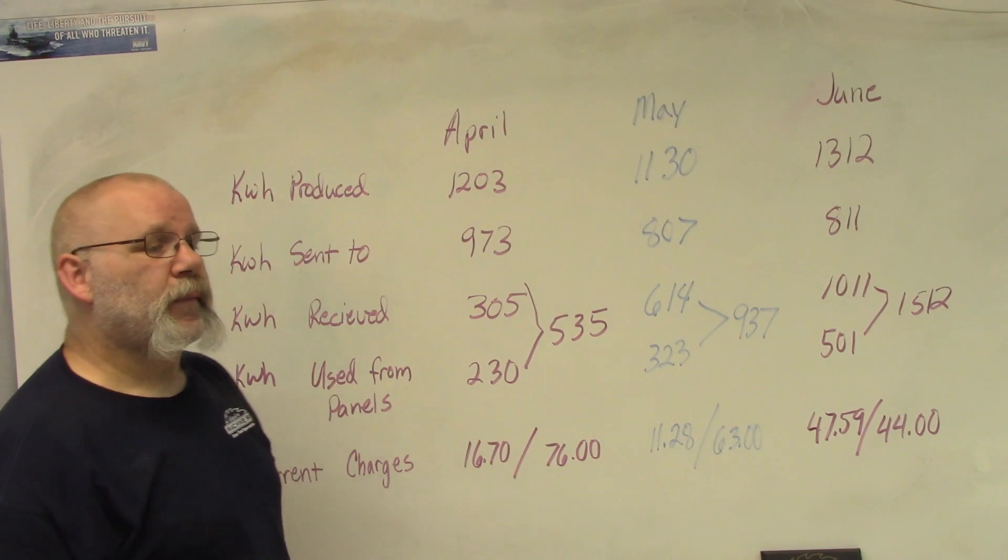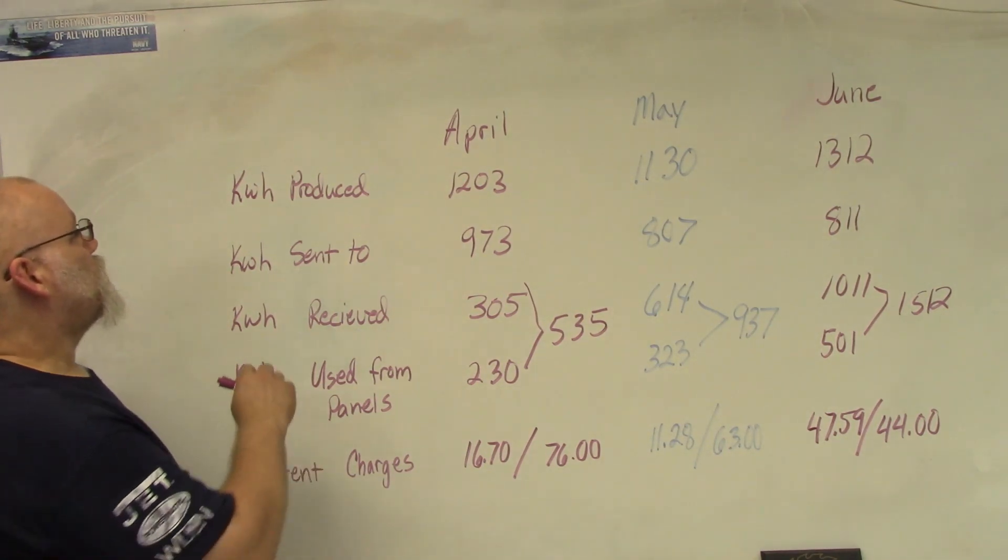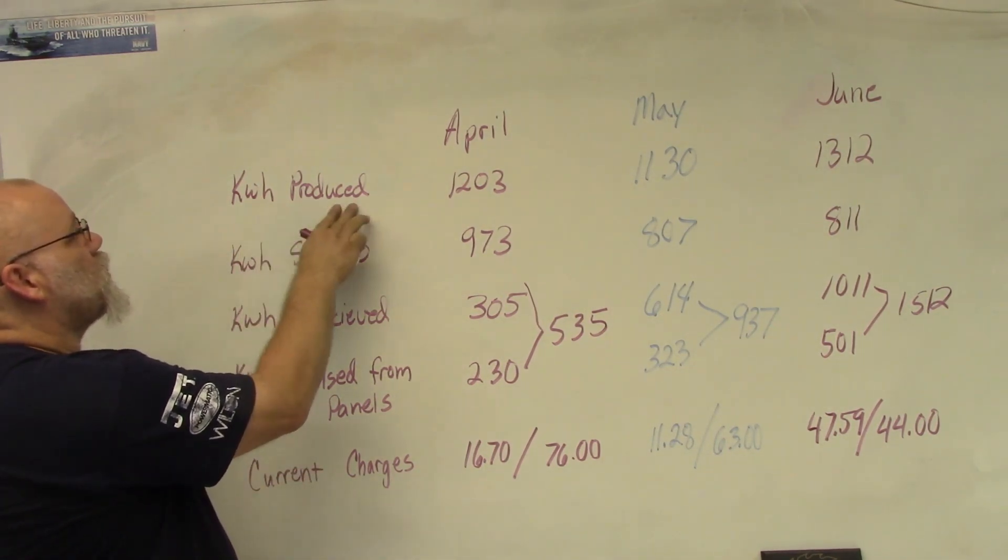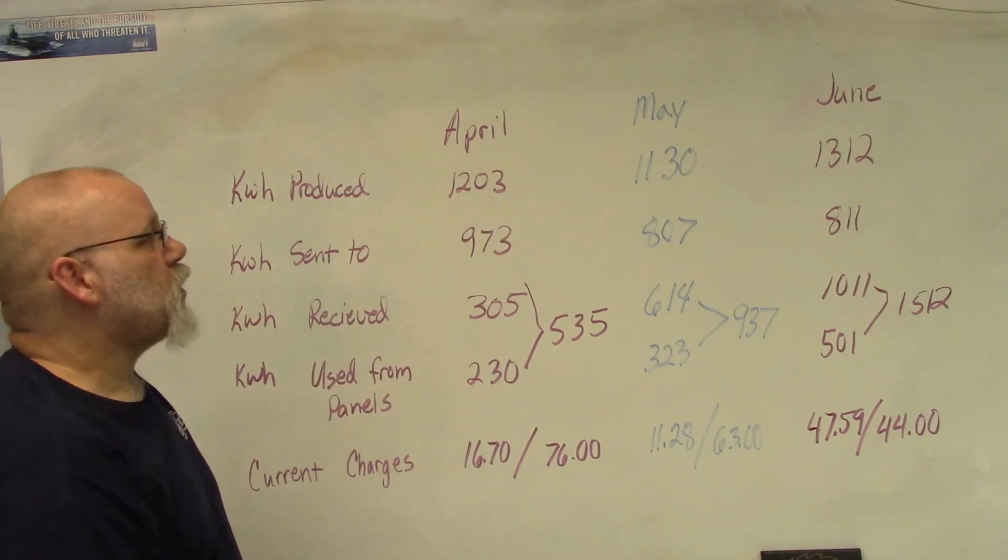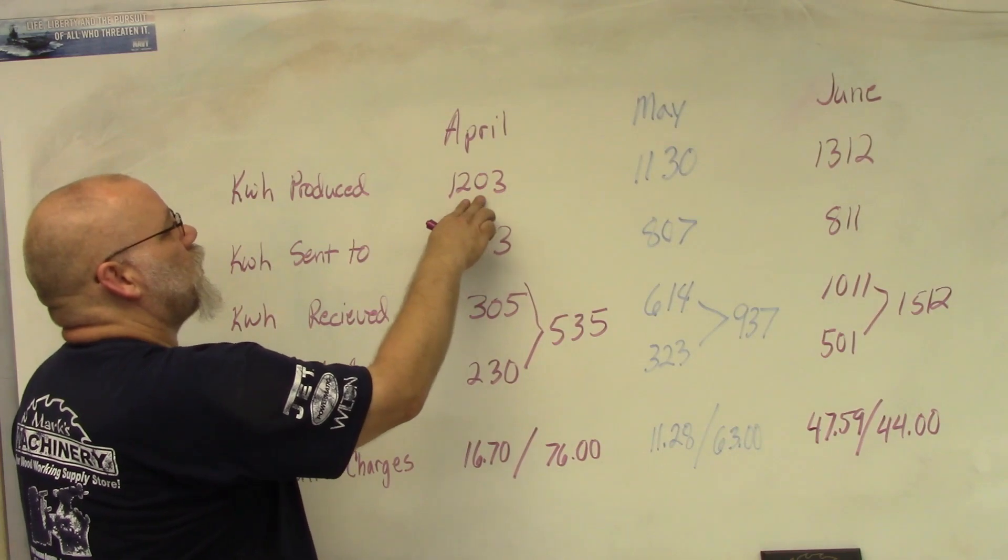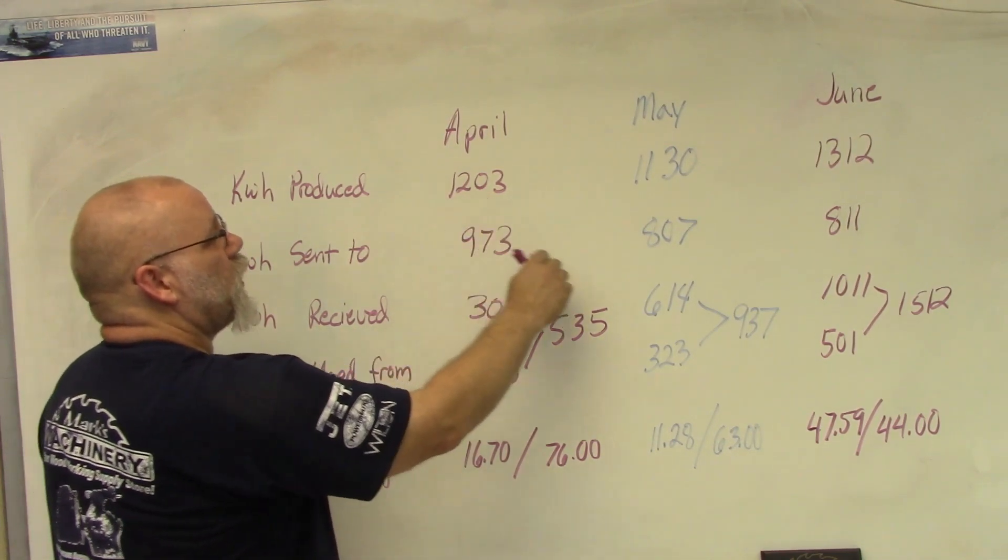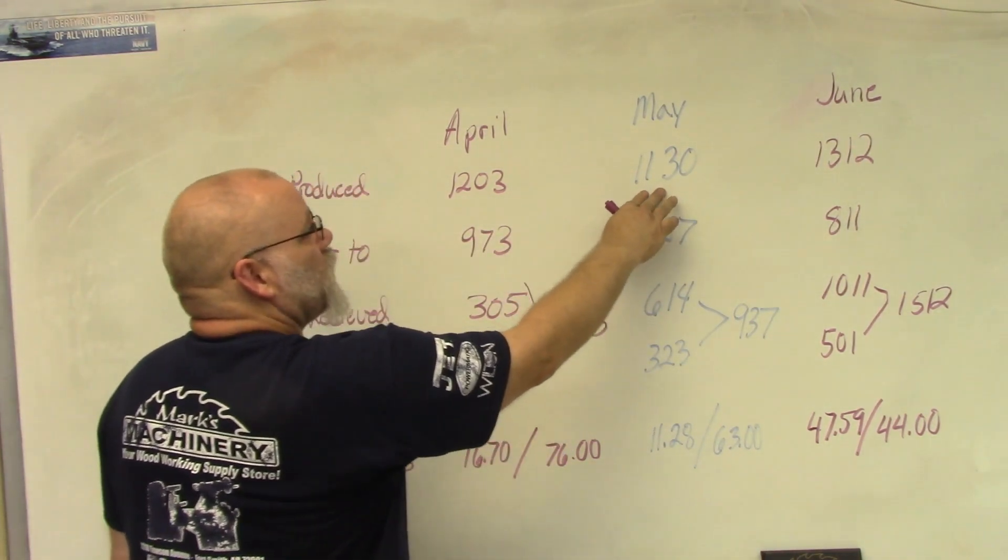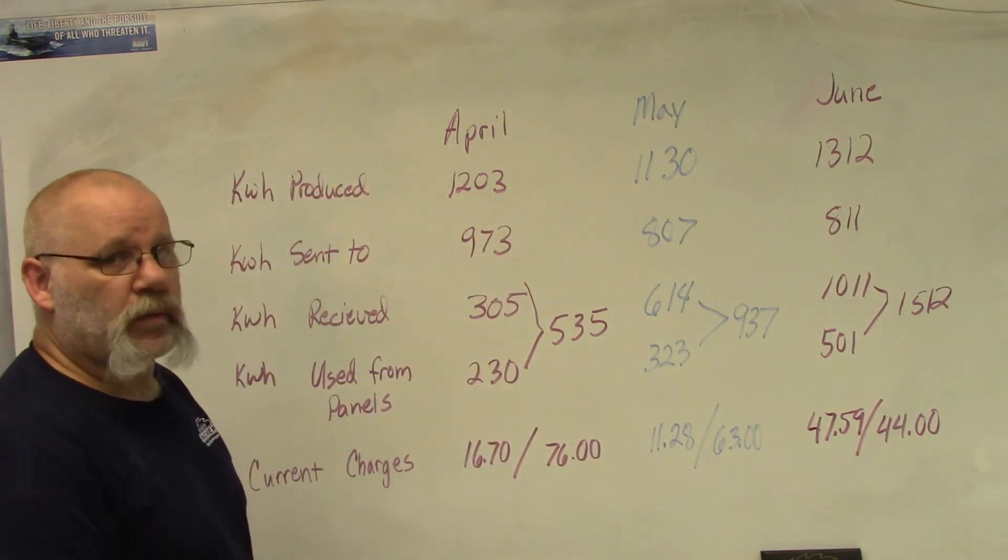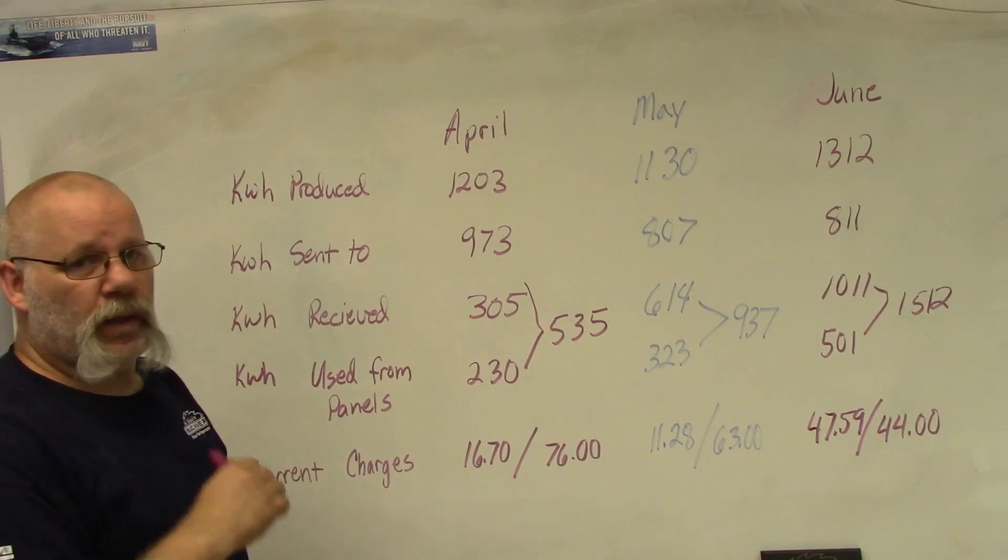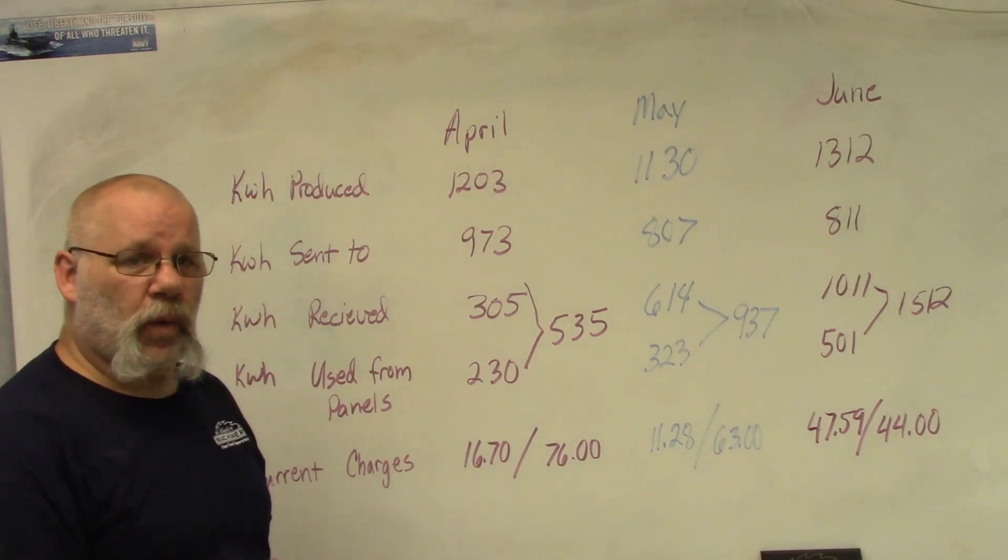First thing we have here is kilowatt hours produced. This number right here is the number of kilowatt hours that our solar panels produced. In April we produced 1,203, in May 1,130, and in June we produced 1,312 kilowatt hours. That's the total number of kilowatt hours produced by our solar panels.